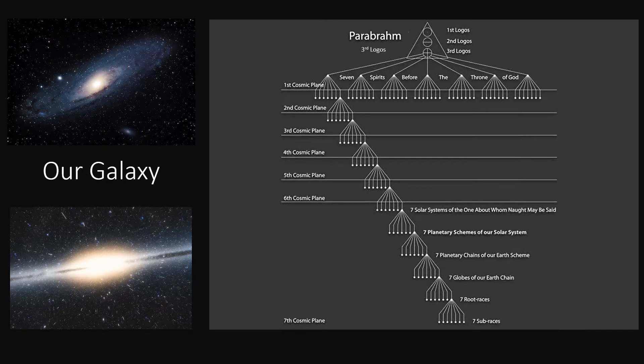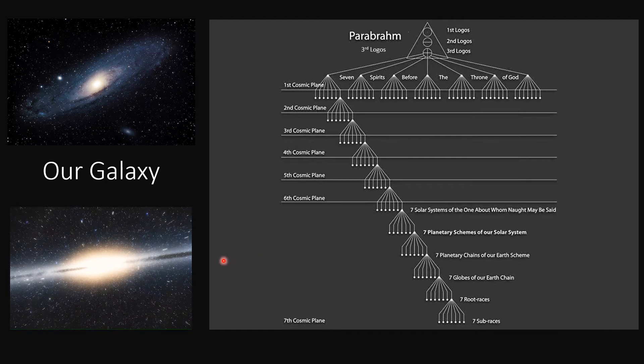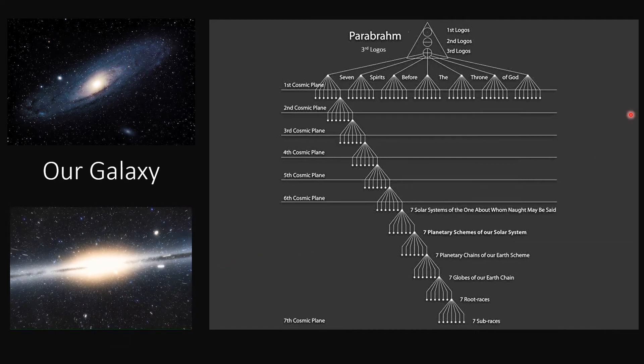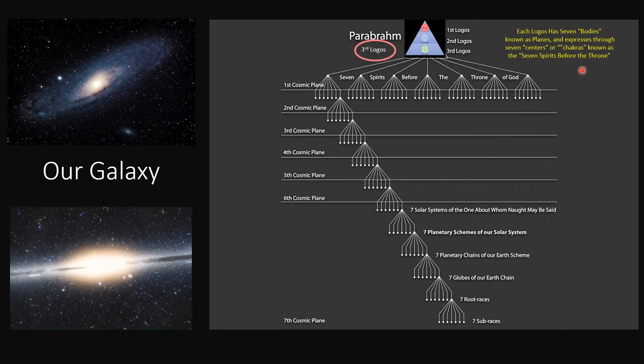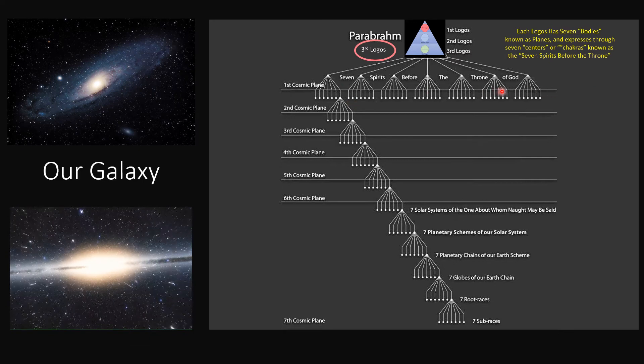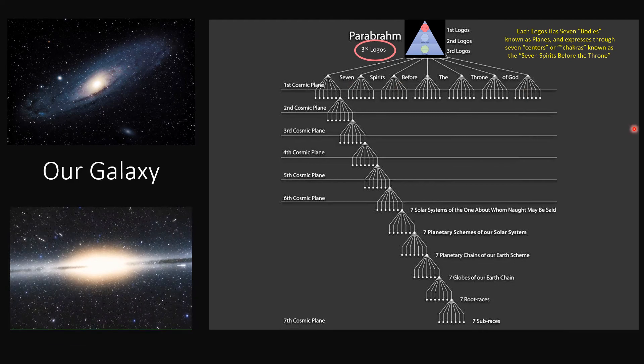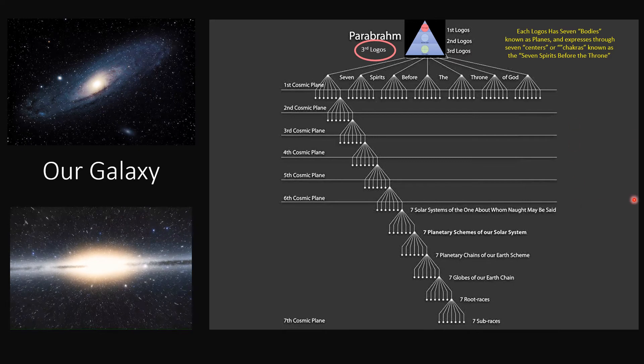Now this is actually how I first got exposed to all of this. And this video is trying to take this chart that I've pondered for a very long time, and put it into visuals and also animation. So here we are in our galaxy. And we are told that that galaxy, that third Logos, is said to have seven bodies, known as seven spirits before the throne of God. Now these can also be looked at as seven planes of consciousness, which we're going to see appear along here in a moment.